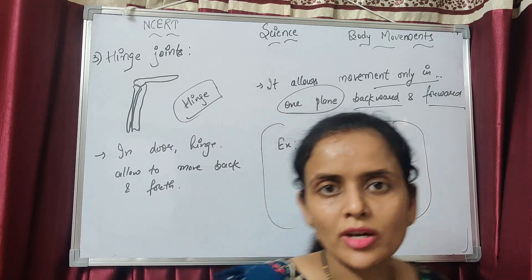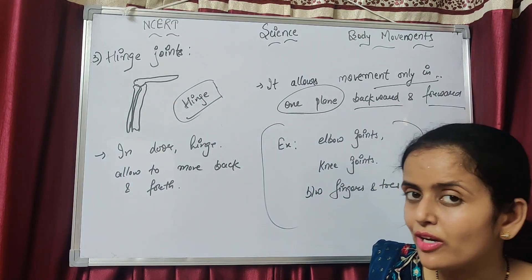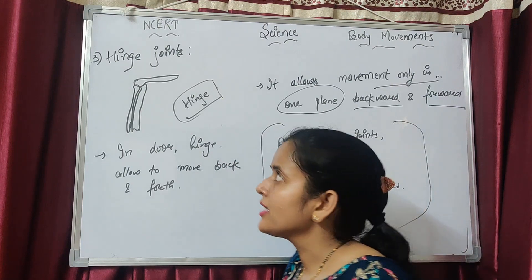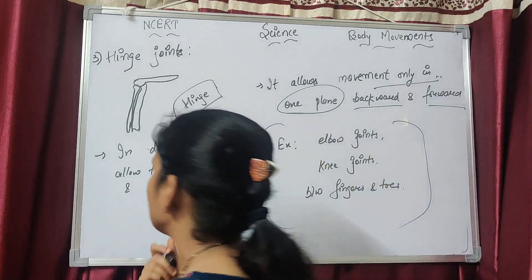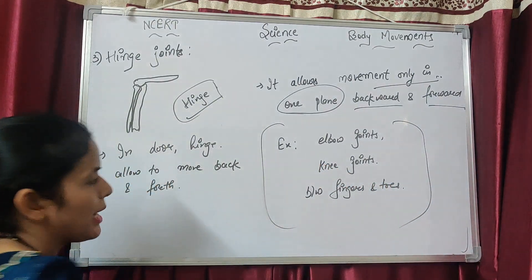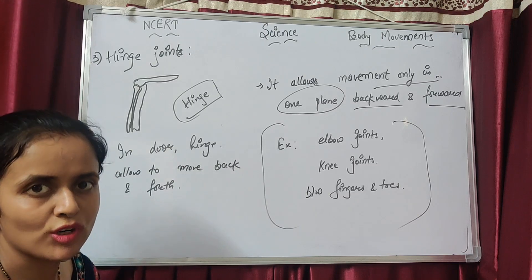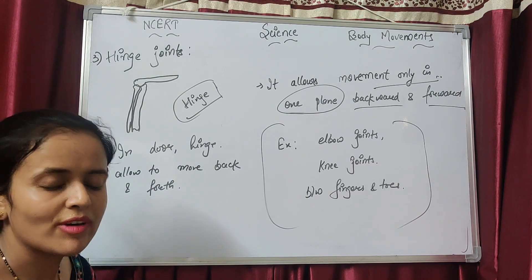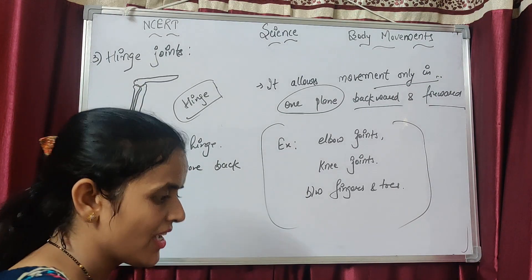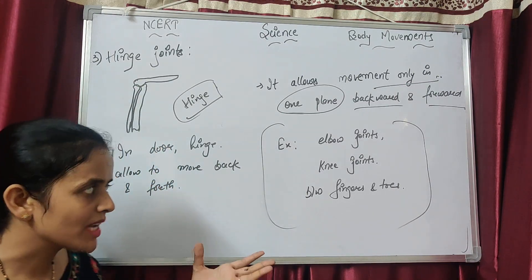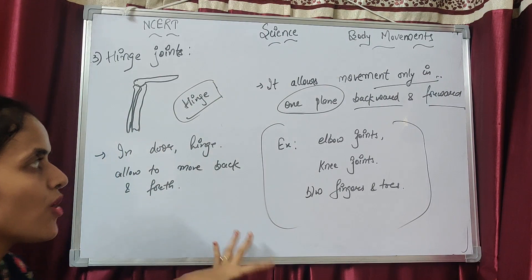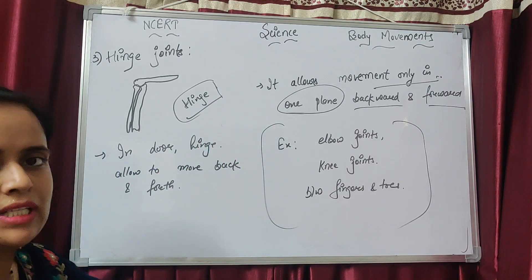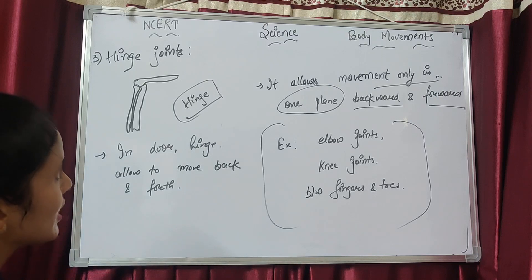Hinge joint is found in the elbow, knee, fingers, and toes. Ball and socket joint is found in the shoulder — it allows circular motion. Pivotal joint is at the neck-head junction — cylindrical bone rotates in a ring. Please focus and remember these distinctions, as there are only one or two key lines per topic.